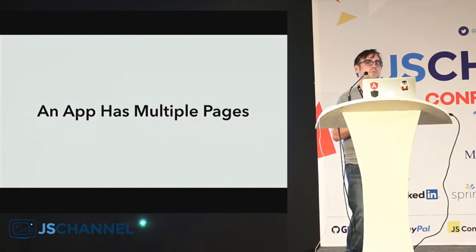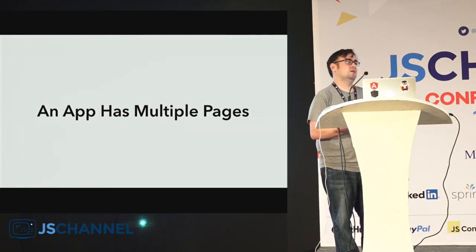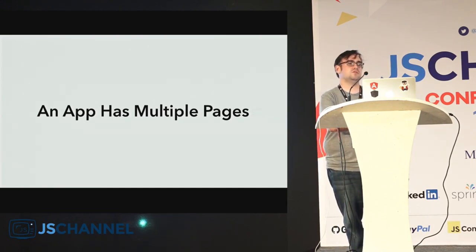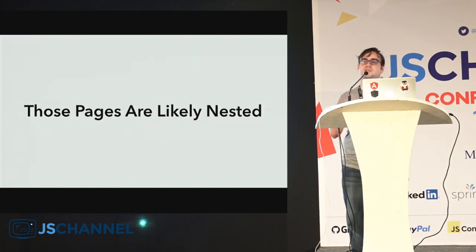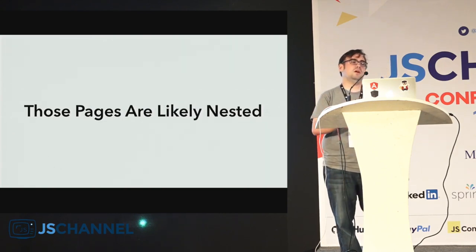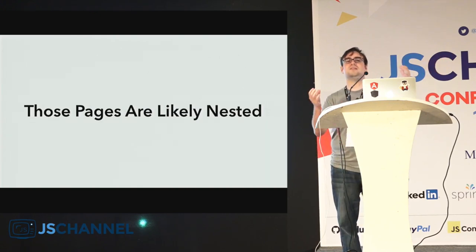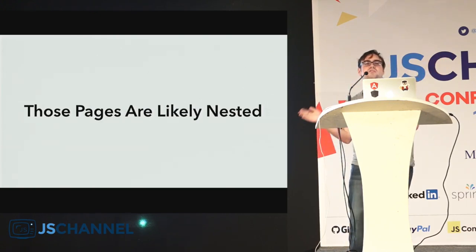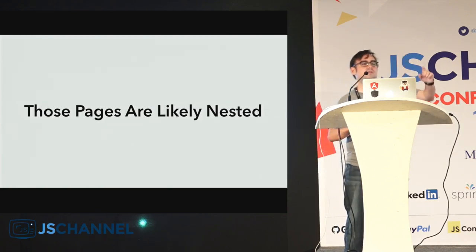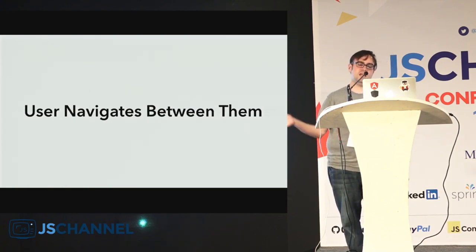The first criteria for an application is that it has multiple pages you're navigating around. Interestingly, a lot of things that you might not think of as applications become applications quickly — things you might not think of as having multiple pages end up with multiple pages very quickly. Also, in pretty much all applications, these pages are somewhat nested. You usually end up having a layout representing your entire application, then inside that a top-level navigation, then another level of navigation. In the Heroku case, there's even navigation inside the next level.